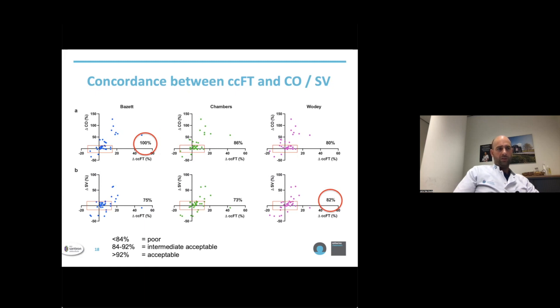When we look at concordance between CCFT and cardiac output in the upper rank, it was acceptable for Bazett's equation at 100%. But it was only intermediate when analyzed by Chambers, and only poor when analyzed by Wodey's equation.